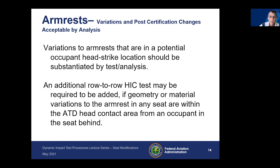Armrests: if you have a variation to your armrest that's in a potential occupant head strike location, it should be substantiated by analysis. You may have to conduct an additional row-to-row HIC test if the geometry or material variation to the armrest is in any seat with an ATD head contact area from the seat behind. If you're making changes to this location, you'll need to assess the likelihood of a head strike and assess it for HIC.